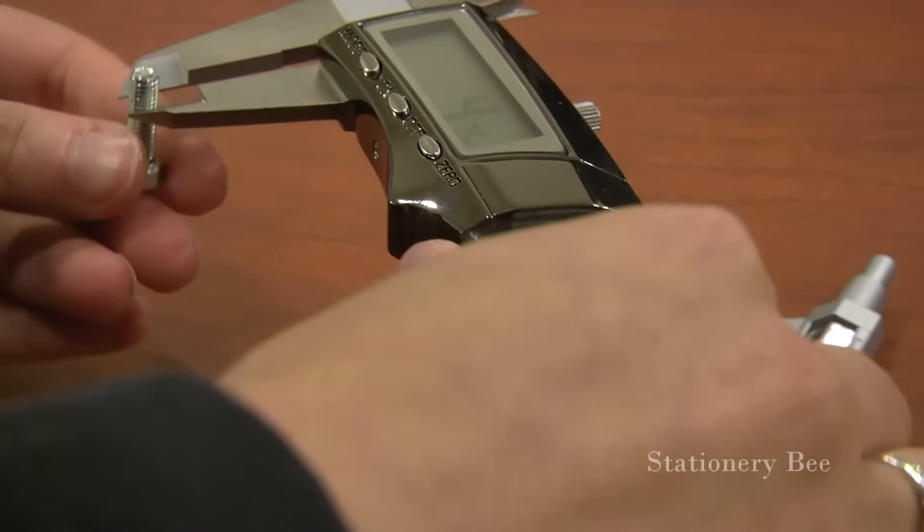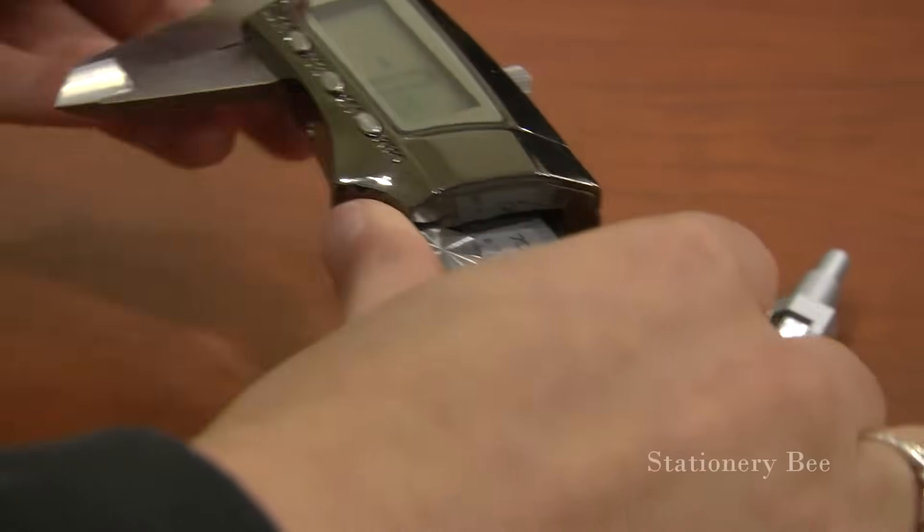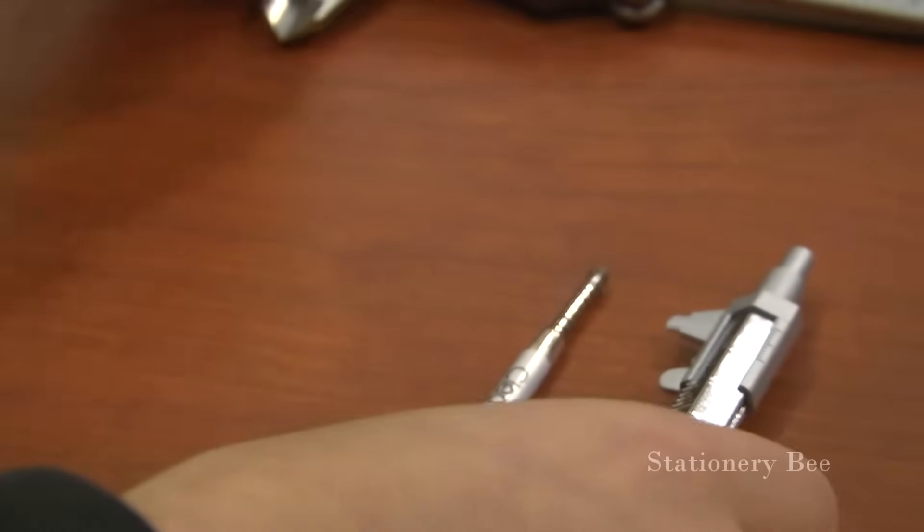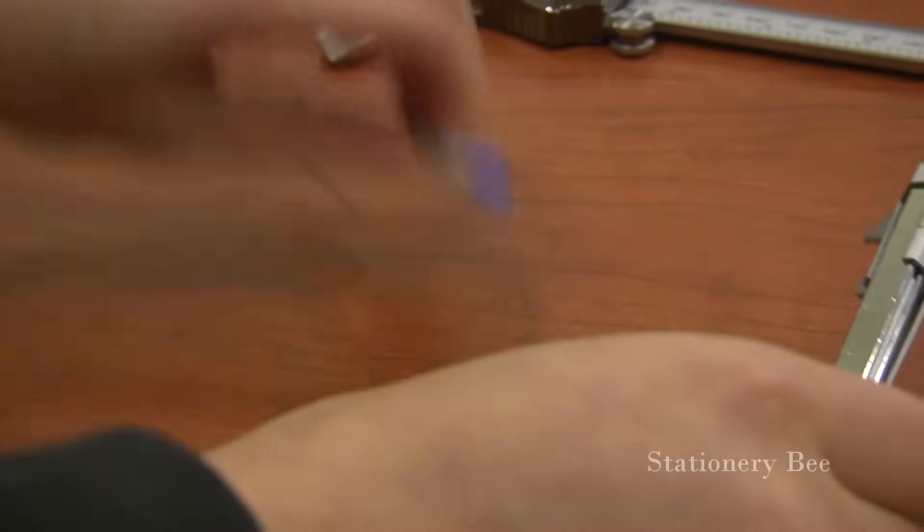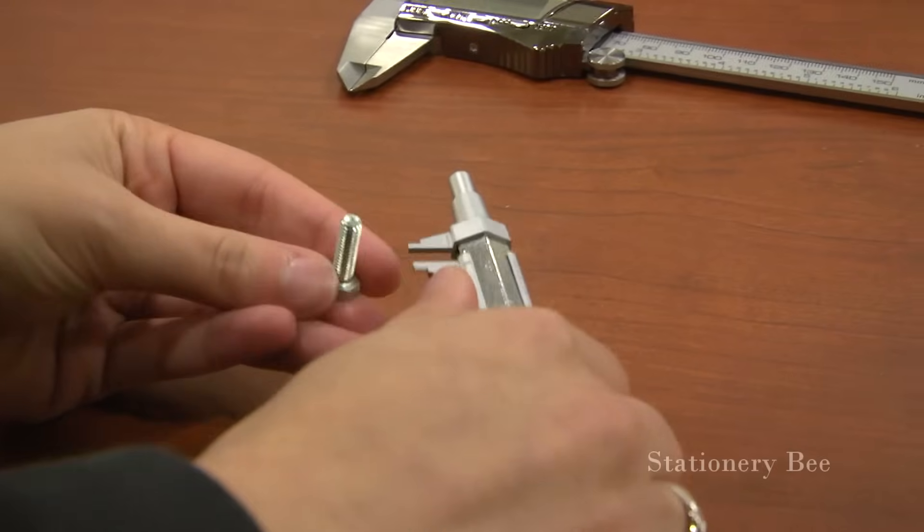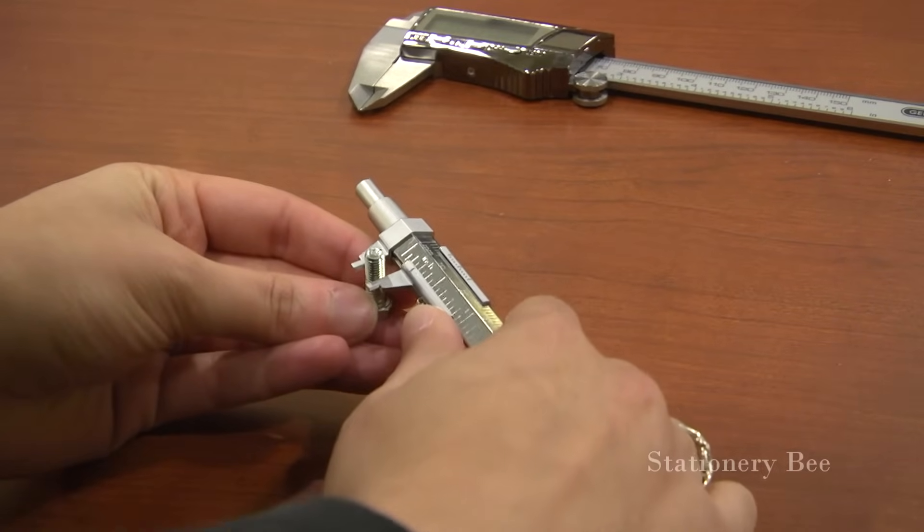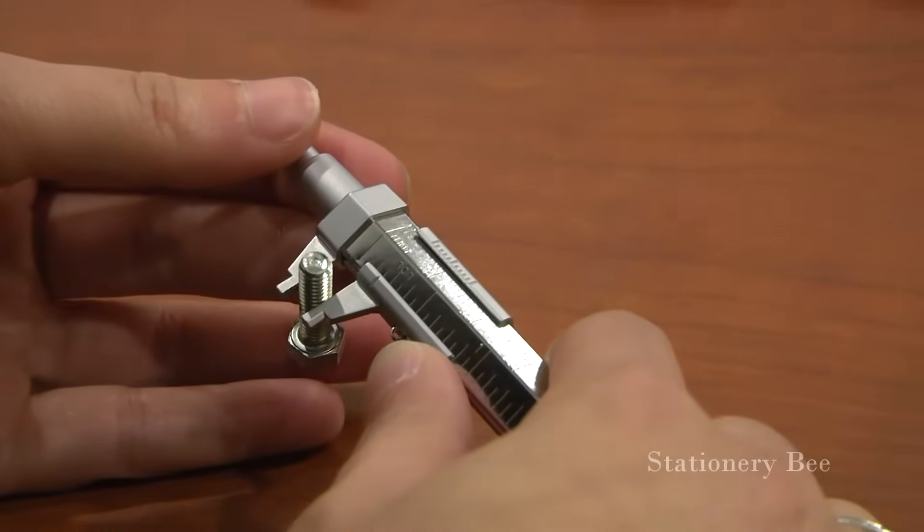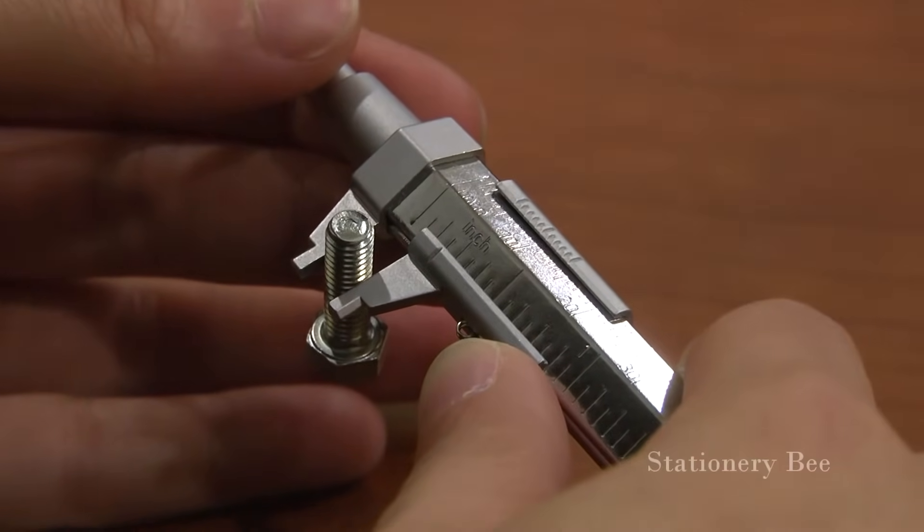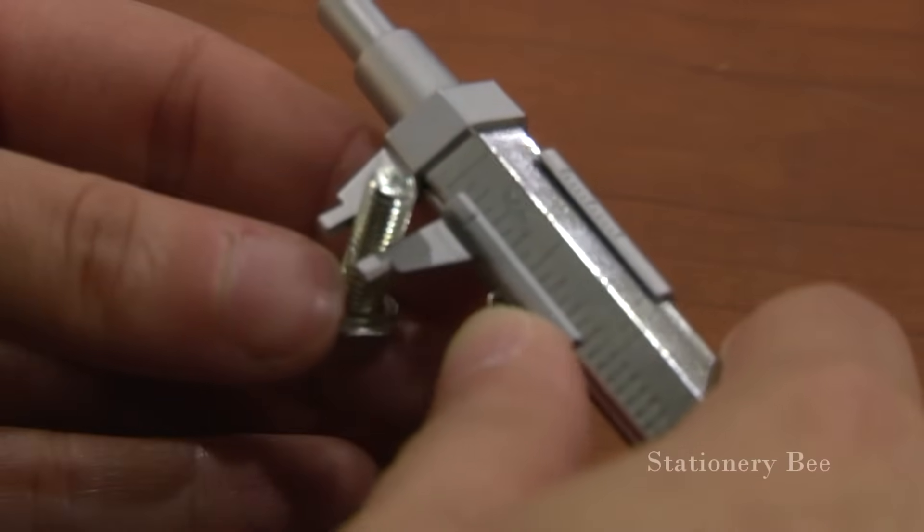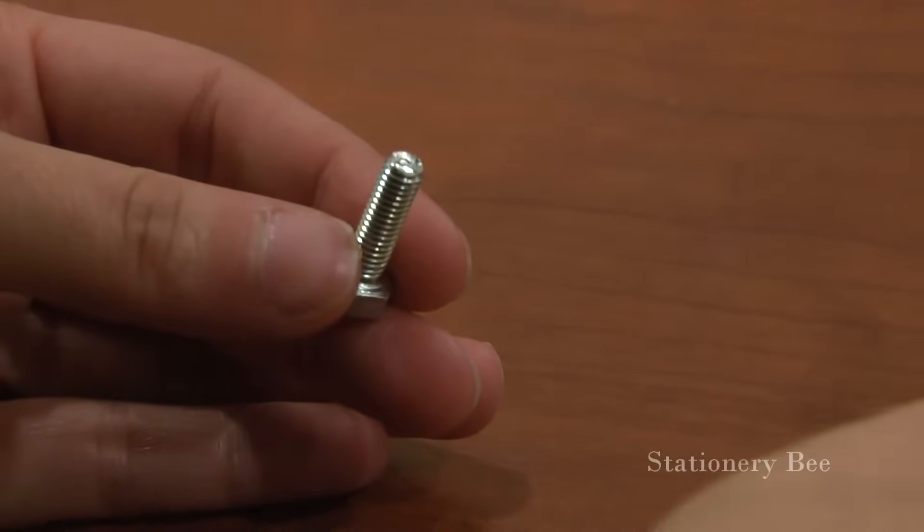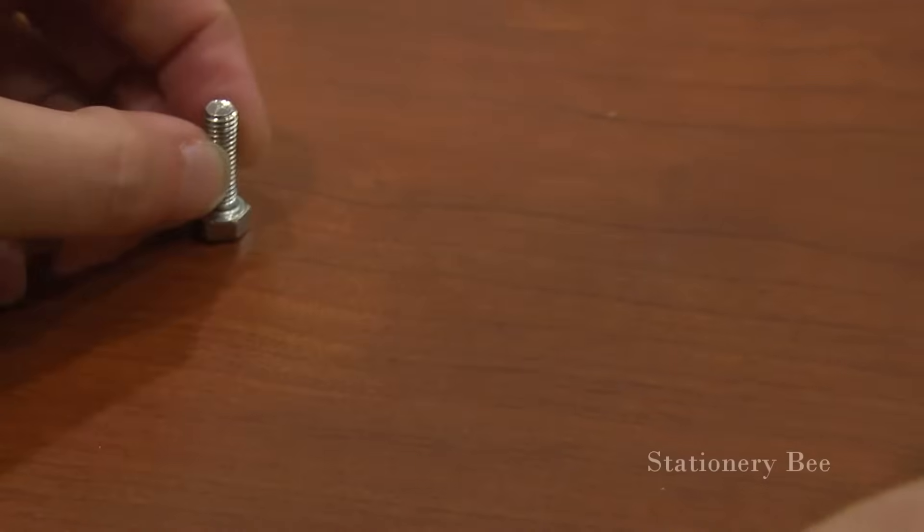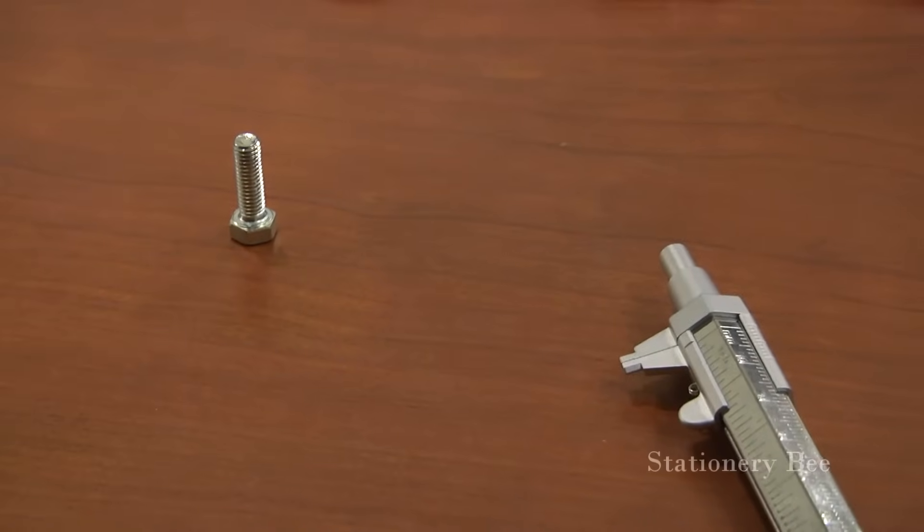And let's use the pen calipers. It is about 5mm, which is what we want. Obviously the digital calipers are more accurate, but the pen calipers give you a pretty good idea of what you are measuring.